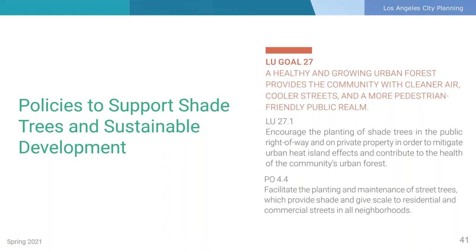In addition to zoning regulations that plan for a more sustainable land use pattern in Boyle Heights, the plan also contains policies to contribute to more sustainable patterns of development in new projects in the community. There are several benefits to increasing the neighborhood's urban tree canopy, from reducing temperatures and urban heat island effects to improving air quality and creating a pleasant pedestrian-friendly public realm. The plan encourages planting of shade trees in the public right-of-way and on private property, as well as facilitating street tree maintenance, providing shade and giving scale to residential and commercial streets in the neighborhood.